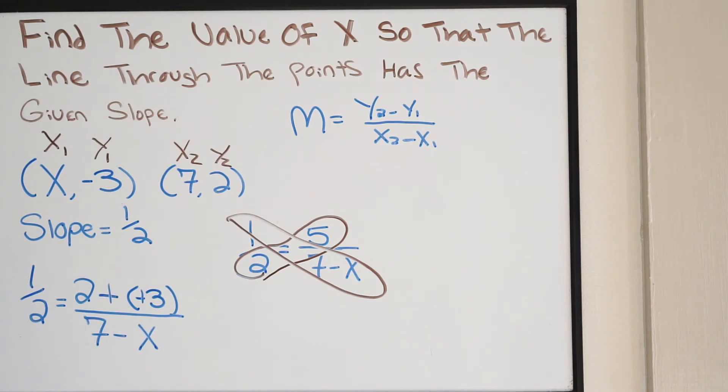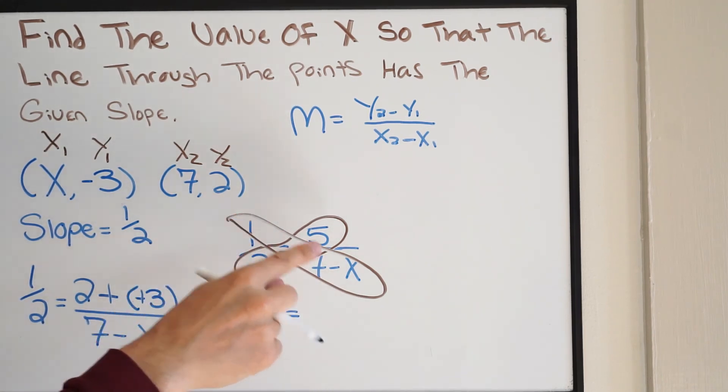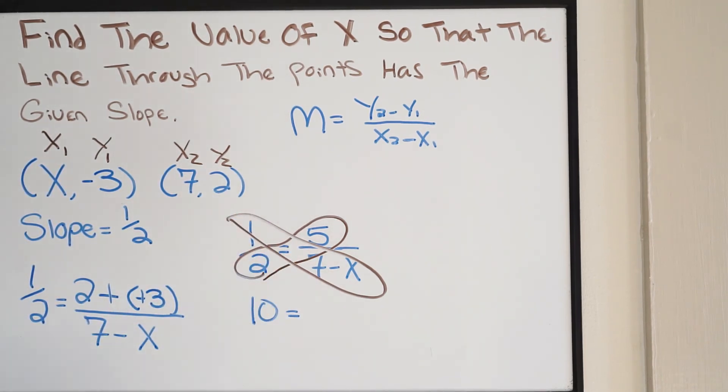So I'm going to do 5 times 2, and I'm going to get 10. And then I do 1 times 7 minus x. Well, that's just going to be 7 minus x.